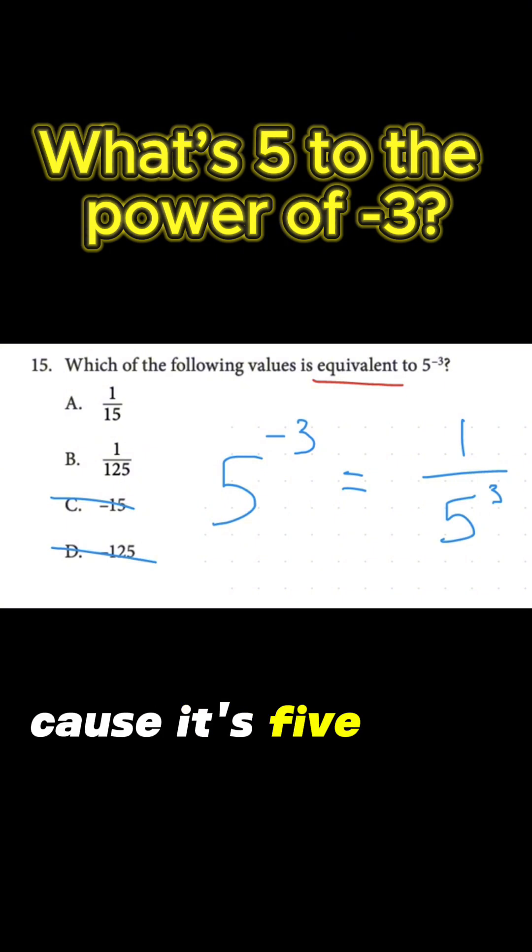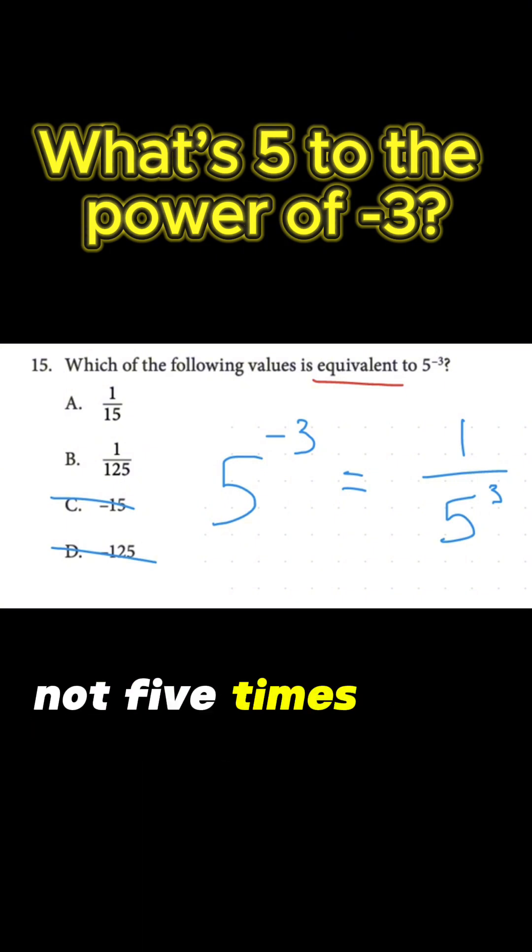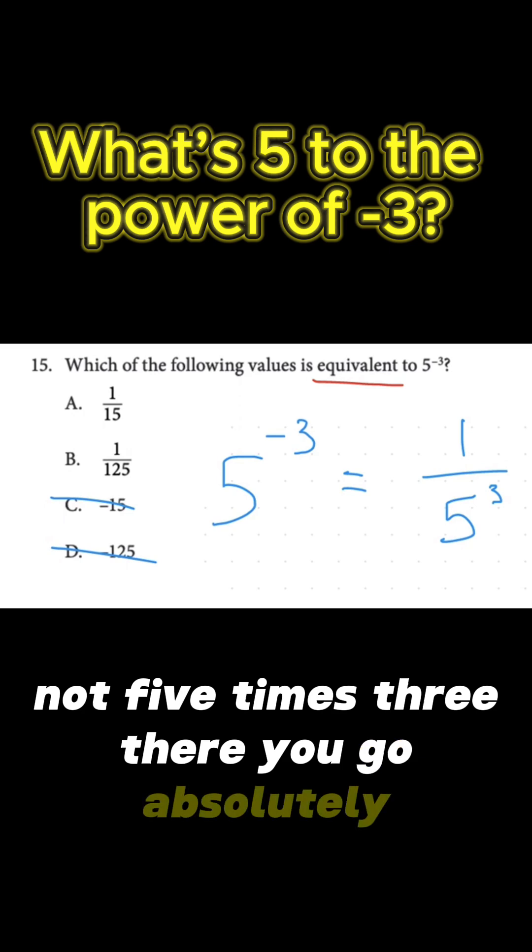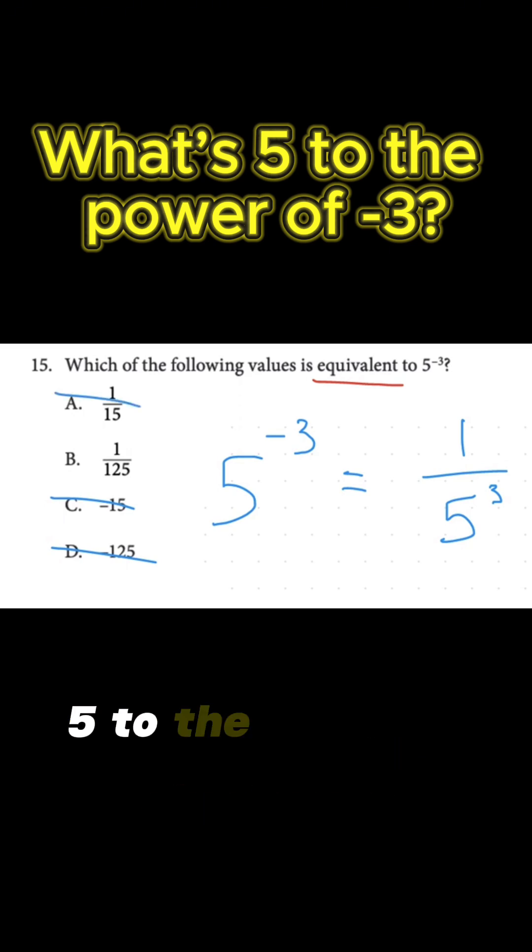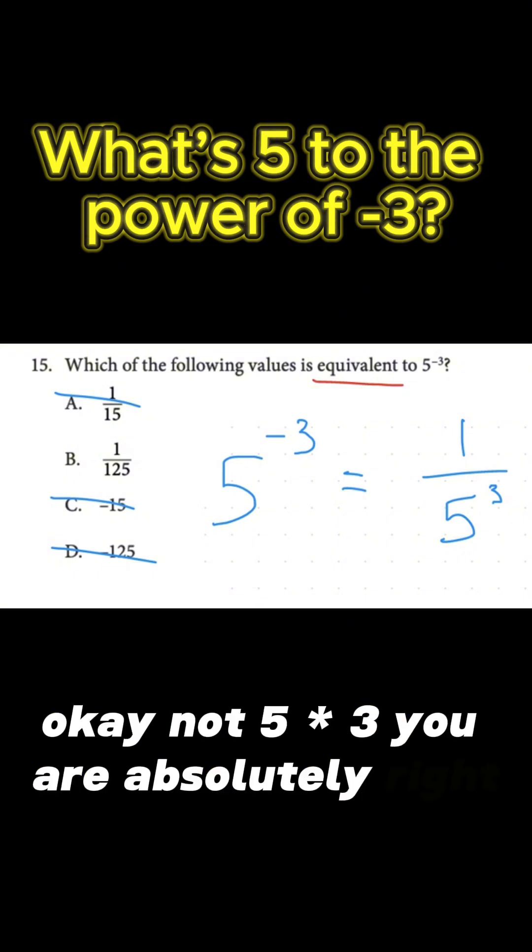Because it's 5 times 5 times 5, not 5 times 3. There you go. Absolutely. 5 to the power of 3 means 5 times 5 times 5, not 5 times 3. You are absolutely right.